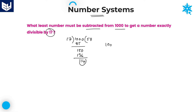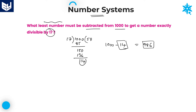We need to subtract 14 from 1000 so that the number is divisible by 17. The required value is 14, and that number is 986. 986 is the last number before 1000 which is exactly divisible by 17. The question asks for the least number that must be subtracted, which is 14. That is the required answer.